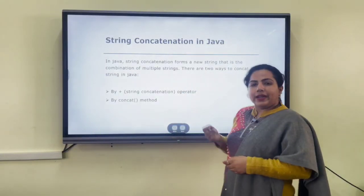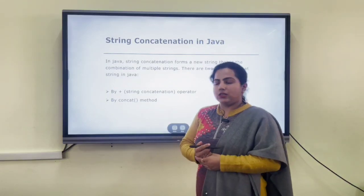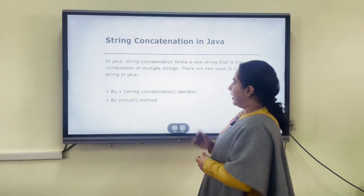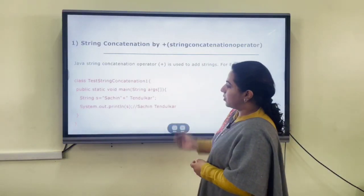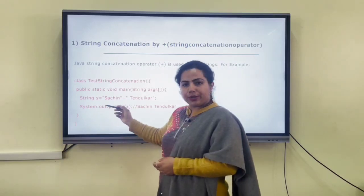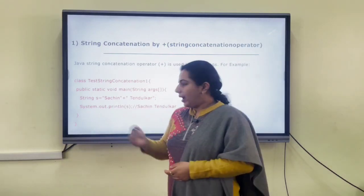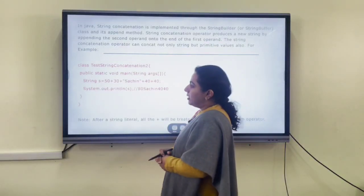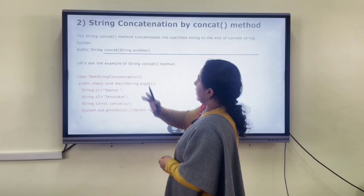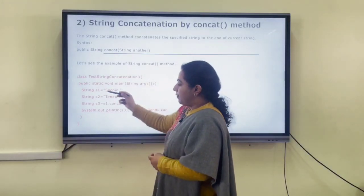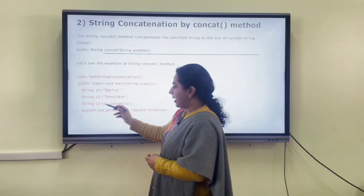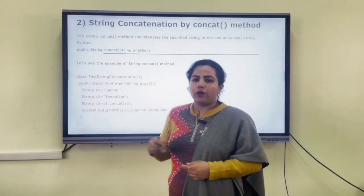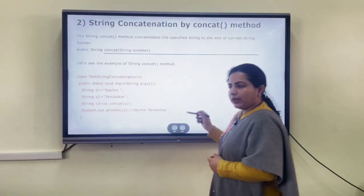Next is the concatenation method. Concatenation in Java strings is done by two methods. First is using the plus (+) operator: we place the first string value, then the plus operator, then the second string value, and it generates a single concatenated string. Second is using the concat() method: we write s1.concat(s2), passing the second string as an argument, and it produces the concatenated result.